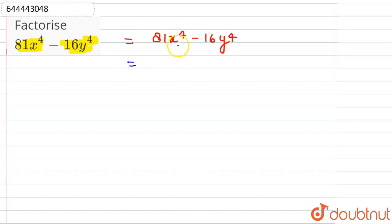We can write 81x to the power 4 as 9x square whole square, that is whole square of 9x square, and 16y to the power 4 we can write this as whole square of 4y square.